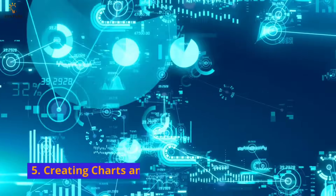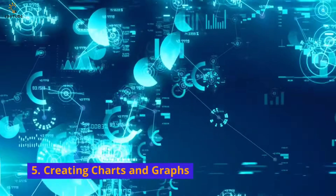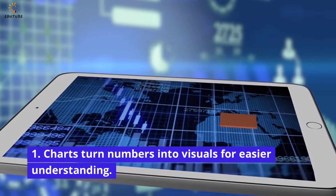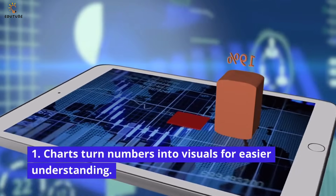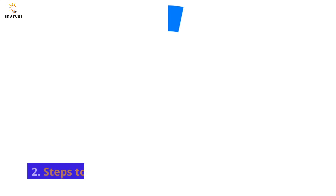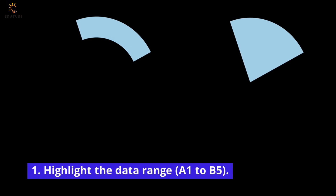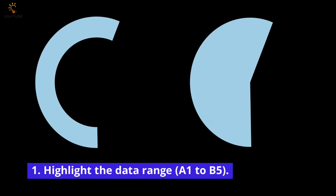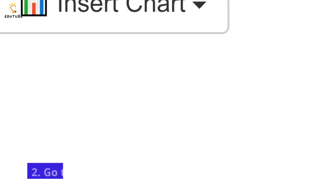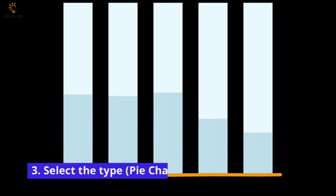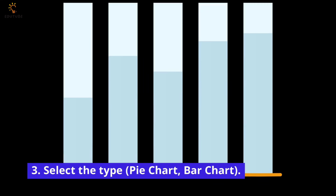Creating charts and graphs: Charts turn numbers into visuals for easier understanding. Steps to create a pie chart: highlight the data range A1 to B5, go to Insert > Chart, then select the chart type — pie chart or bar chart.